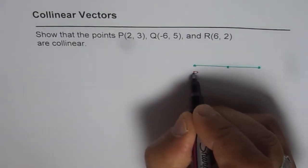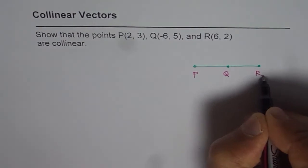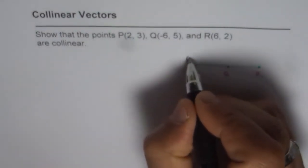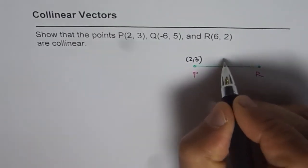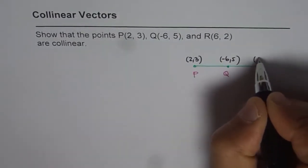What we need to prove here is, I am just writing P, Q and R. Now, the points are 2, 3 for P. For Q, it is minus 6 and 5, and for R, it is 6 and 2.